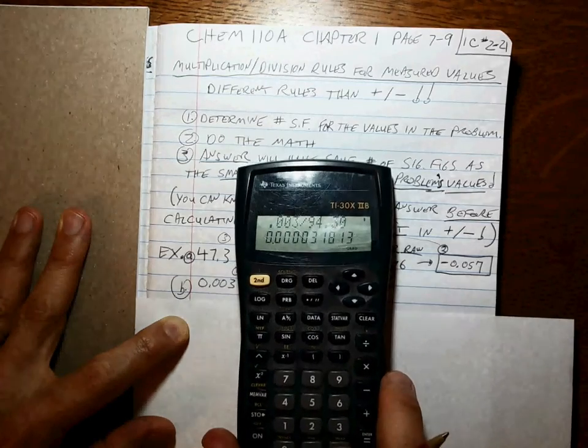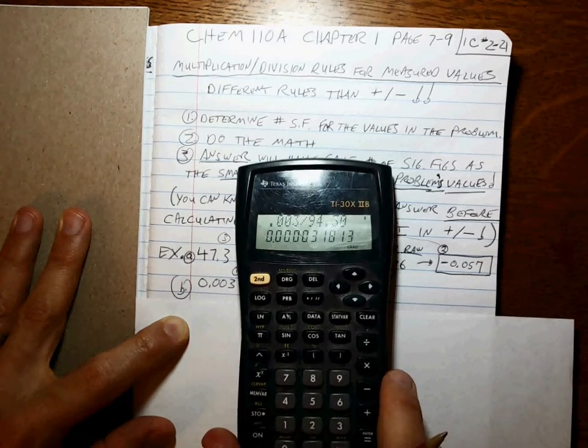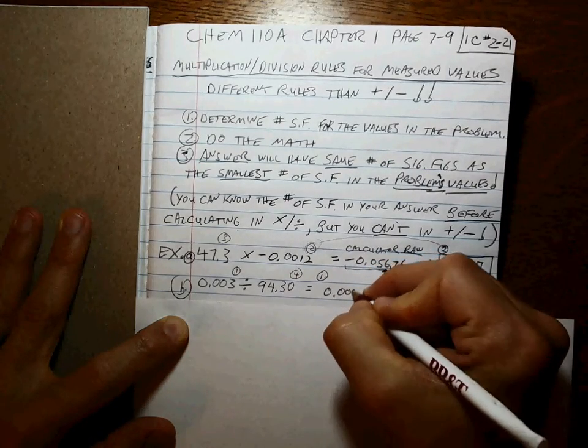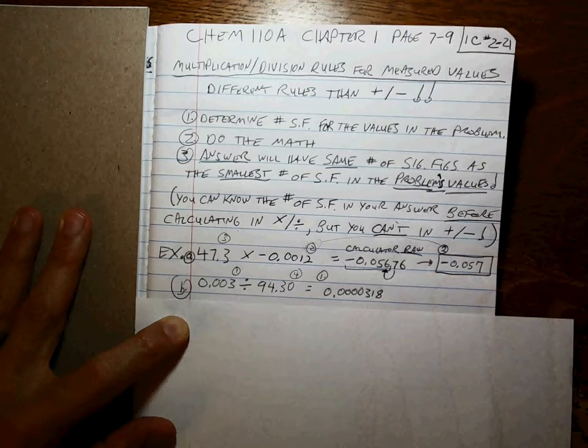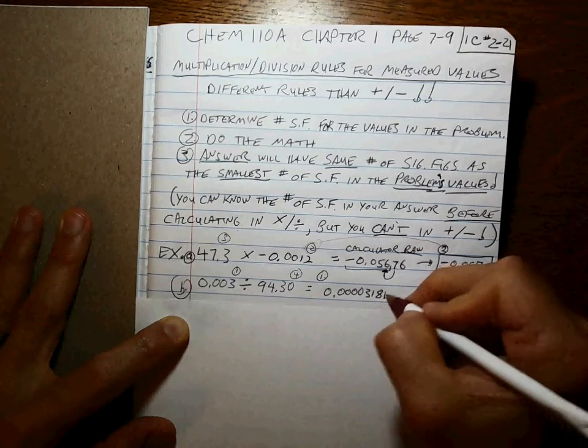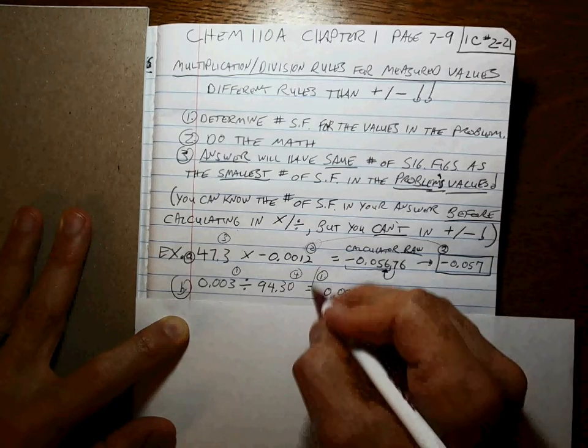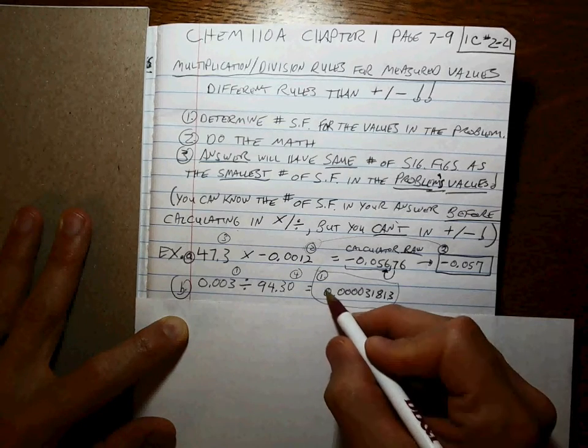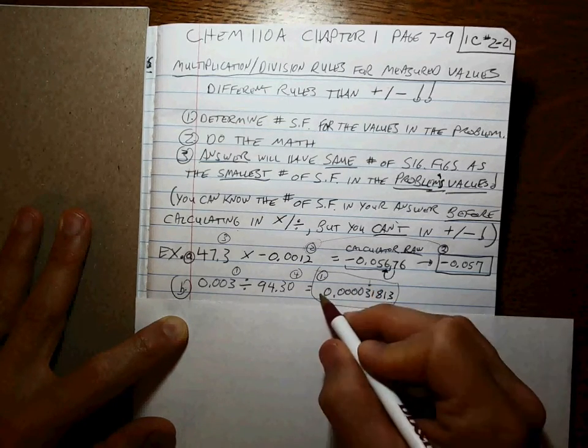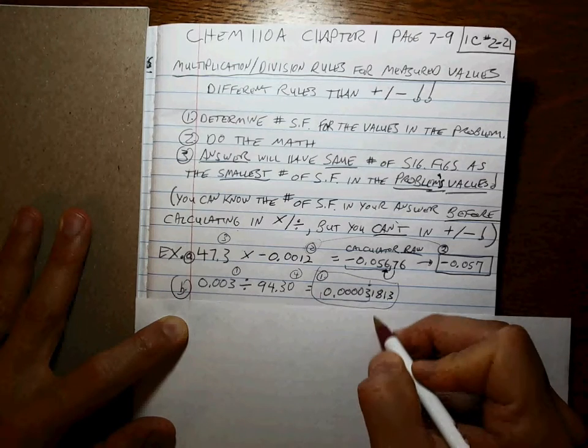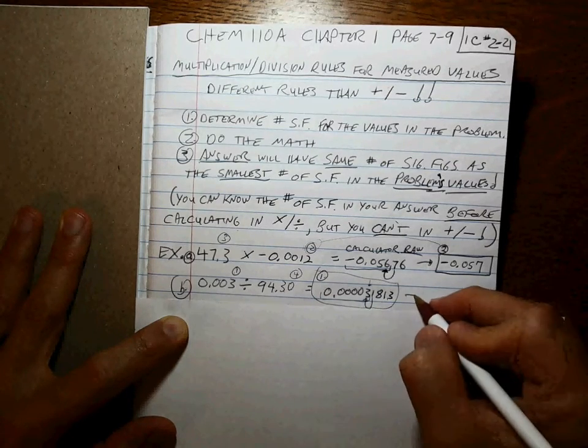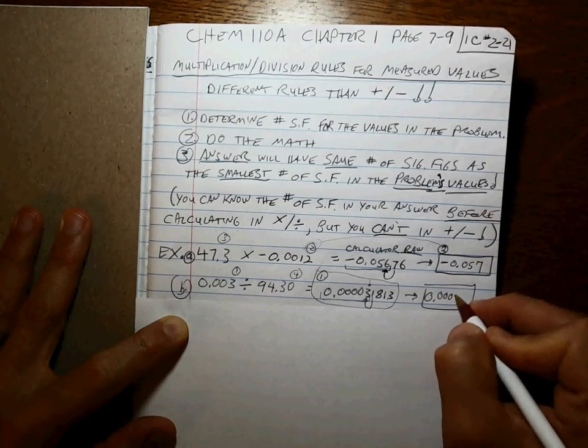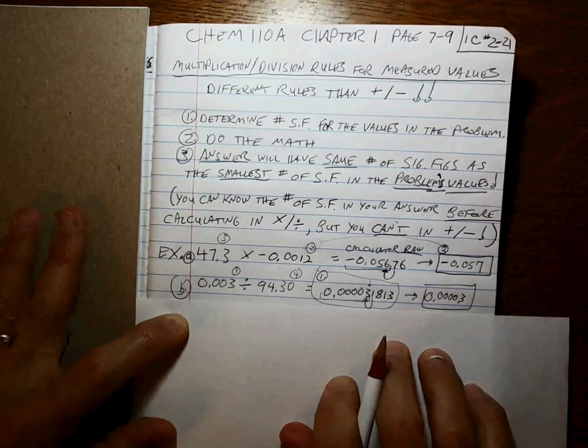So it is 0.000031813. How would you write that number to one significant figure? Which is the first significant digit? None of these are significant until we get here. So these are the significant. Does that round up? It does not. So what's the final answer? 0.00003. That's it. That's all we got to do.